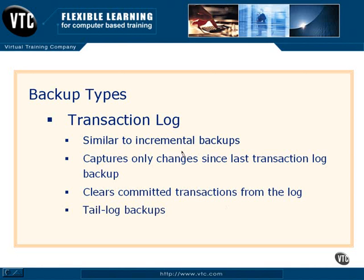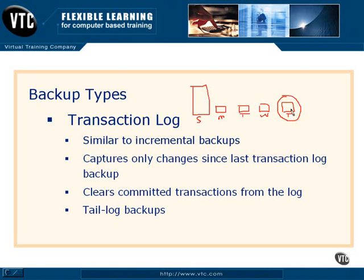You will hear one other term: it's called a tail log backup. If we did a full backup on Sunday and then transaction log backups on Monday, Tuesday, and Wednesday, and we have a failure on Thursday — say at 2 o'clock in the afternoon — there was a little bit of information in that transaction log on Thursday before the failure happened. We need to back that up because it contains the last transactions that will get us back up to the point of failure on Thursday afternoon. That particular backup is called a tail log backup, and you do that backup when you get to the scene of a server crash. So there are the backup types you have to choose from — you'll have to decide which strategy works for you and your organization.